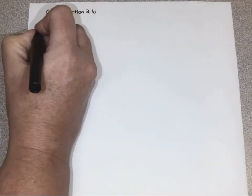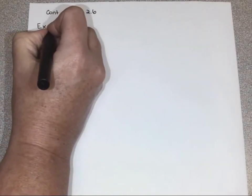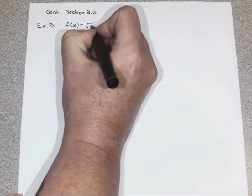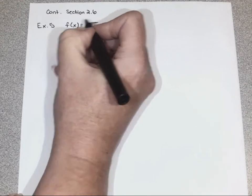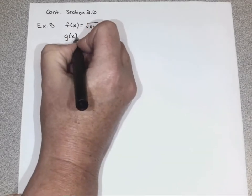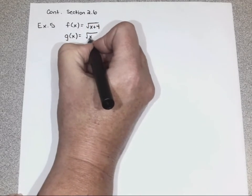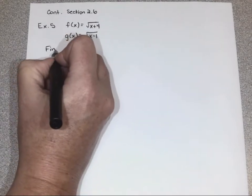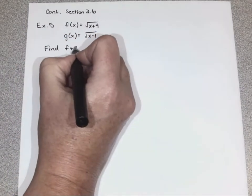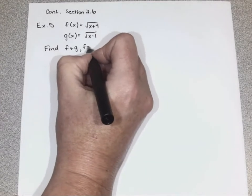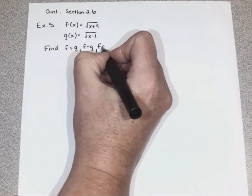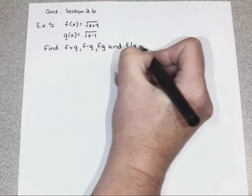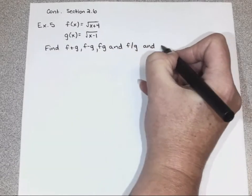So I wanted to look at one more where we are going to use addition, subtraction, multiplication, and division to combine terms. So let's say these are the functions, and then I ask you to find f plus g, f minus g, f times g, and then f divided by g, and each domain.